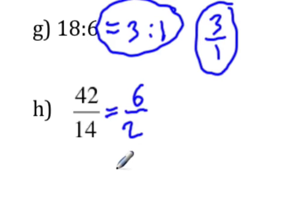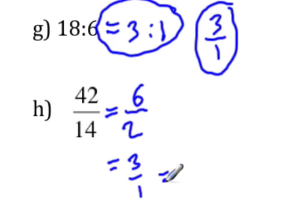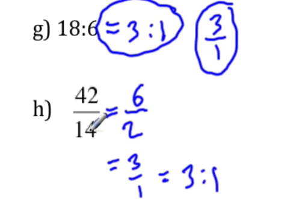It turns out we're able to reduce this as well, so this is equal to 3 over 1, which is the same thing as 3. So that means we could have used 14 as the greatest common factor, because 14 divides into 42 three times.